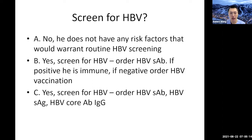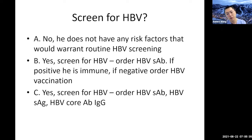The first question I wanted to ask you to think about is whether or not this person needs to be screened for hepatitis B. The choices are: A, no, he does not have any risk factors that warrant routine screening. B, yes, we should screen with hepatitis B surface antibody only — if positive, that means he's immune, and if negative, we can vaccinate. Or C, we should screen for hepatitis B and order all three tests: surface antibody, surface antigen, and core antibody IgG.